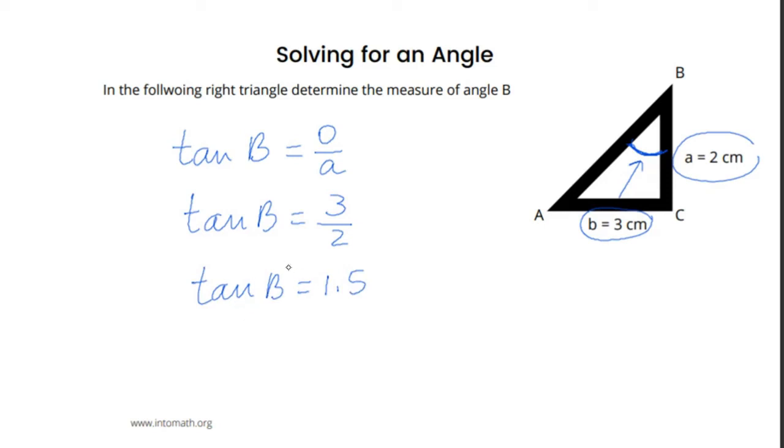Tangent B is equal to 3 over 2 or 1.5. And now, I need to find the angle. So, angle B is equal to tan inverse of 1.5. In your calculator, when you're solving for the angle, you have to press second function button or shift button, depending on your calculator, and then sine, cosine, or tangent ratio, and then the value of the ratio. So, if you do that, you will get the angle of approximately 56 degrees.